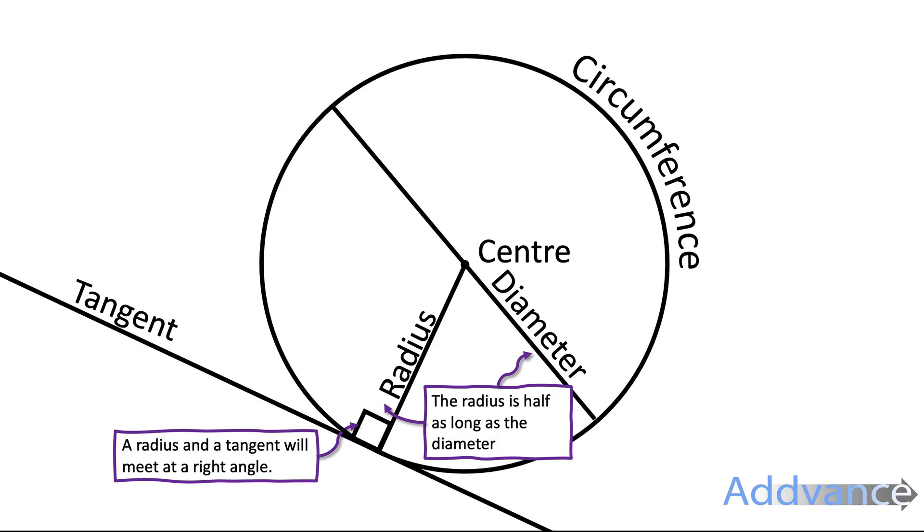Then we have the diameter, that is a straight line that goes from one side of the circle to the other, through the center. The diameter is always twice as long as the radius. The radius is half as long as the diameter.